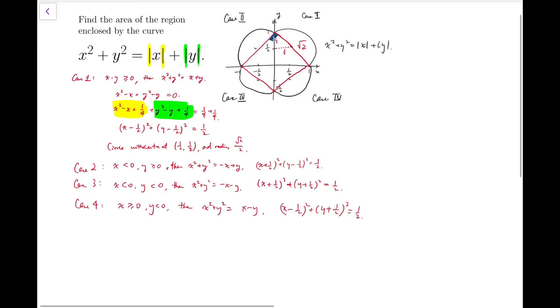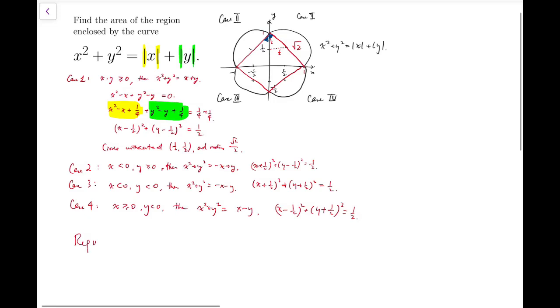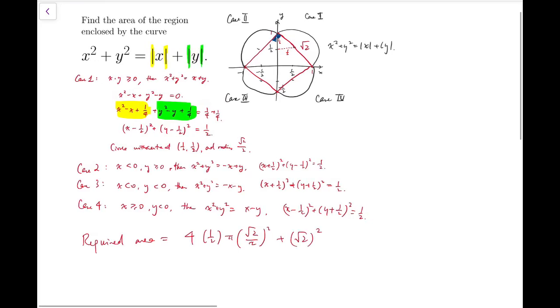So that means, we can say that the required area is four semicircles and then plus the square in the middle. And the square in the middle is actually having a side length, root 2, because it's actually the distance between 1, 0 and 0, 1. So that means, the answer after calculating is pi plus 2. And that's it.